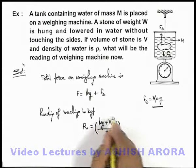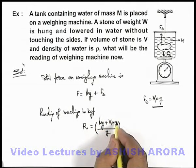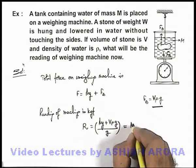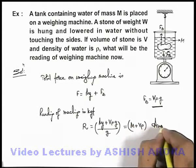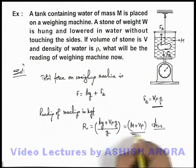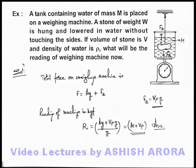As this is the value of the force exerted in newton, this can be written as M plus Vρ. That will be the answer to our problem - this is the total reading being shown by the weighing machine in kilogram force.